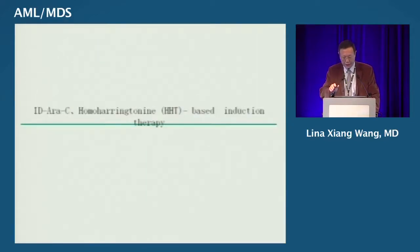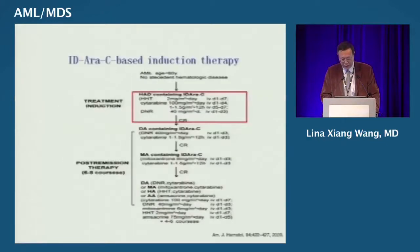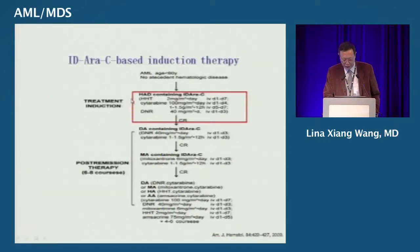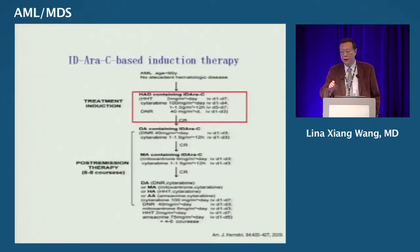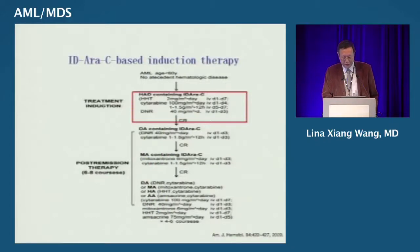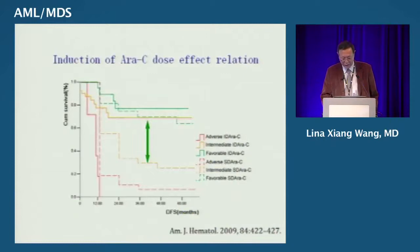Another advance in China for homoharringtonine-based induction therapy is the use of different cytarabine doses. In this trial using the HAD regimen, standard-dose cytarabine was used for the first four days, then escalated from day five through seven. The rationale is that the first days reduce leukemia burden with conventional dose, then the escalated cytarabine kills leukemia cells more efficiently. After achieving complete response, patients receive two cycles of intermediate-dose cytarabine combined with daunorubicin and mitoxantrone.